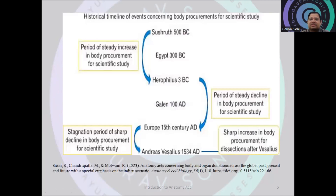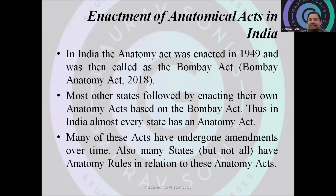Looking at the timeline, from the Sushruta period to the Herophilus period there was a steady increase in body procurement for scientific studies and good dissection work was being done. Then there was a period of decline in body availability for scientific purposes. Ultimately the process started booming again after the law was enacted. This is how the anatomy act eventually came to India.